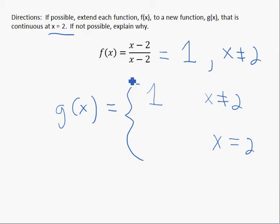Well, since this function, g of x, is the same as f of x, which is 1 everywhere except for 2, then as x approaches 2, the limit should be 1.